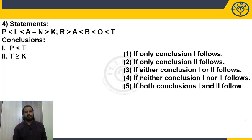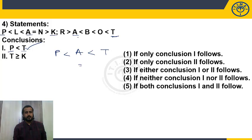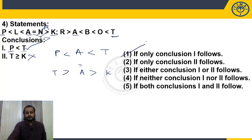Question 4 has two statements. First conclusion: P and T. Common element is A. P and A: less than, less than, less than — P < A. A and T: less than, less than — A < T. So P < T — conclusion one follows. Second conclusion: T ≥ K. Common element is A. A and T gives T > A. A and K: equal to leads to greater than substitution, so A > K. Therefore T > A > K gives T > K. But the given conclusion is T ≥ K — does not follow, since the definite result is strictly greater than. Only conclusion one follows — choice 1.